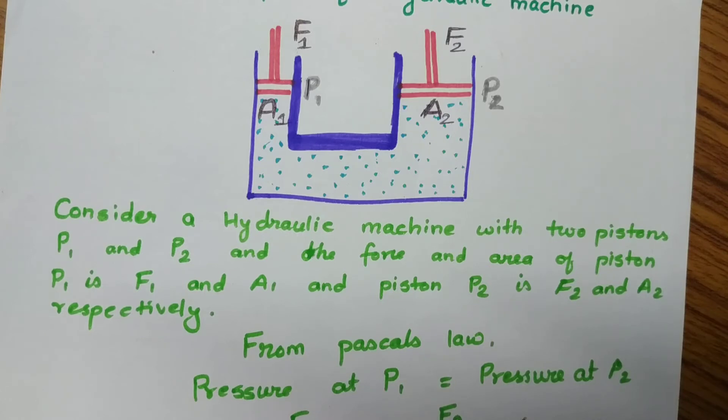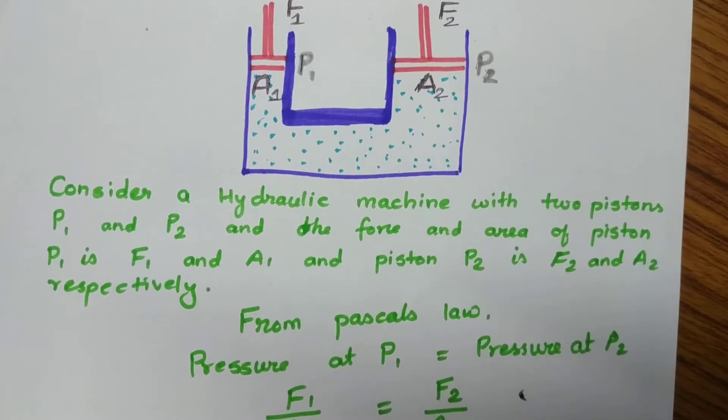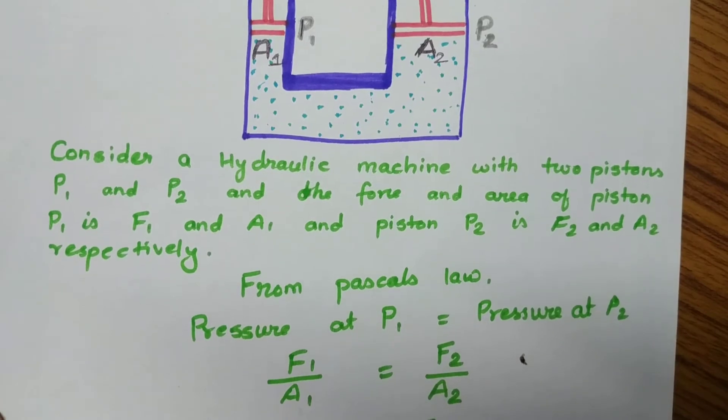Pressure is given by the formula force by area. So at piston P1 we have F1 by A1, and at piston P2 we have F2 by A2.